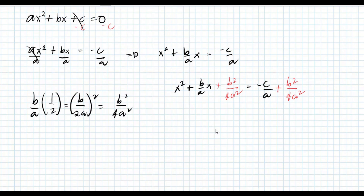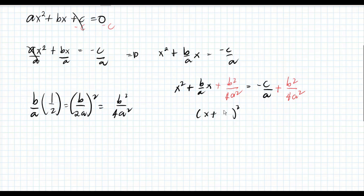We can now factor the left side of the equation. The factored form is the square of x plus b over 2a, equals the right side.